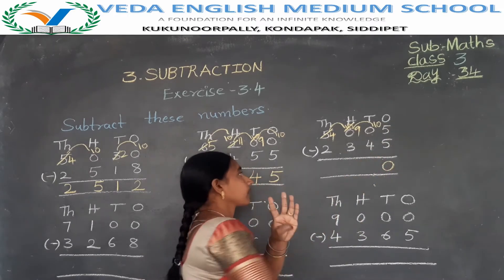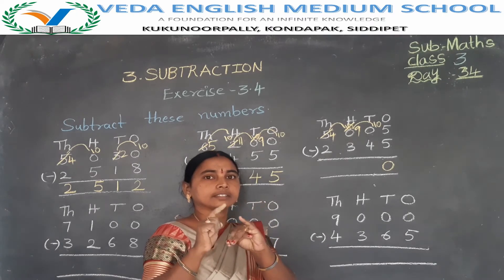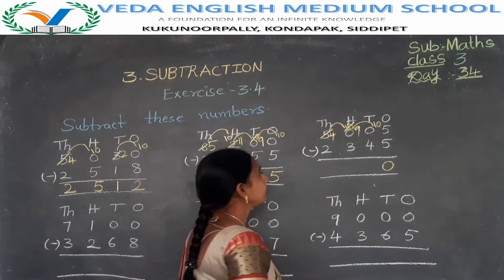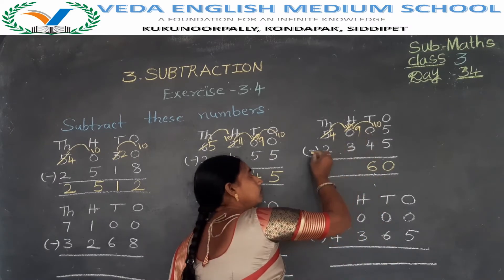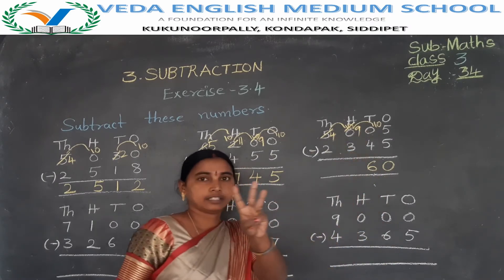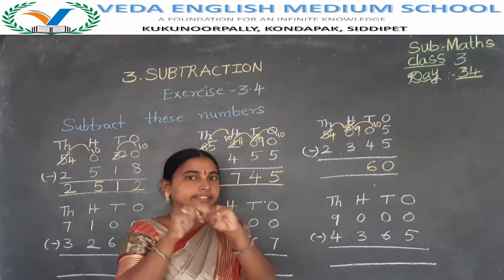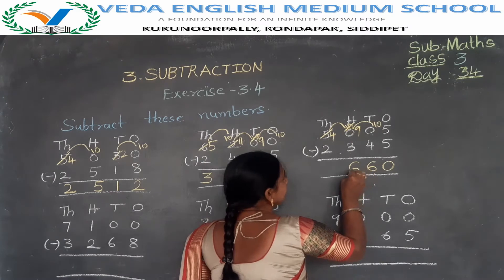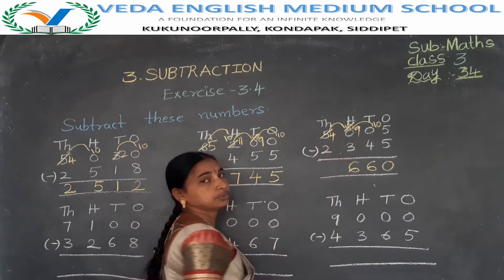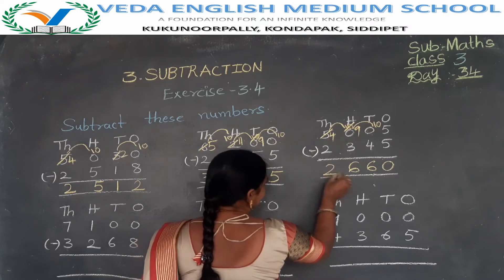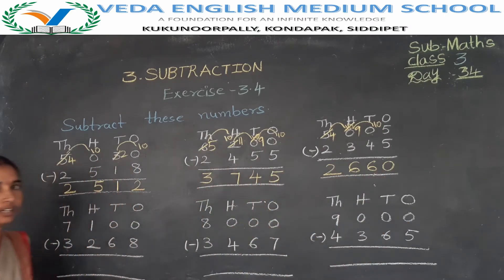Now do the subtraction: 10 minus 4, with 4 fingers — 9, 8, 7, 6 — equals 6. Then 9 minus 3: backward counting — 9, 8, 7, 6 — equals 6. Then 4 minus 2 equals 2. The difference is 2660.